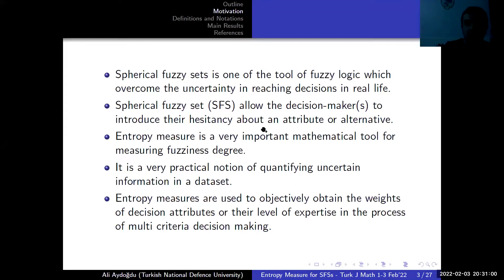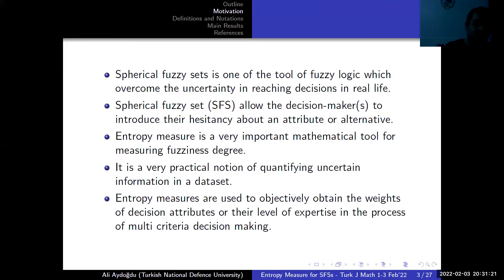The spherical fuzzy sets allow decision makers to express their hesitancy about alternatives. The entropy measure is a very important mathematical tool for measuring fuzziness degree. Fuzzy entropy is a practical notion for quantifying uncertain information in multi-criteria decision making processes, and the entropy measure is used to objectively obtain the weights of decision attributes and expertise level.